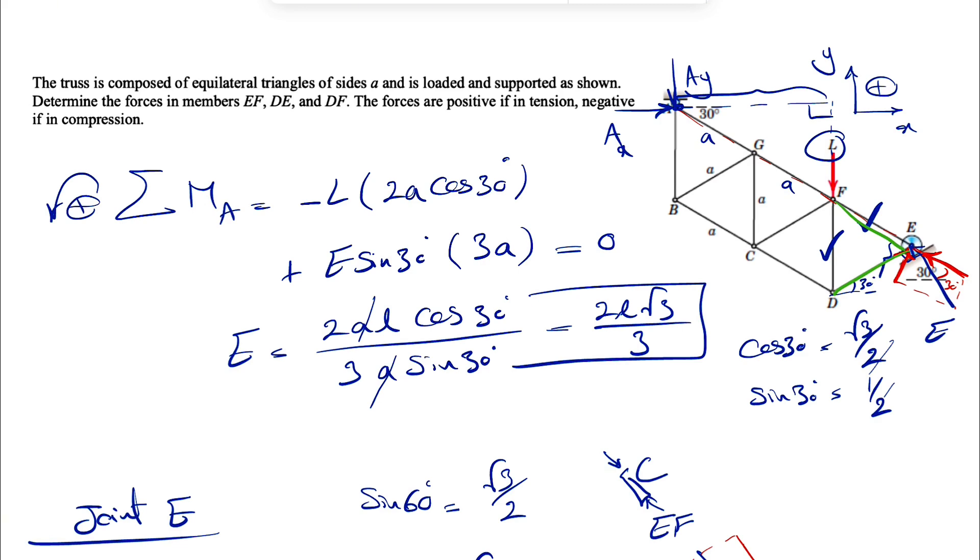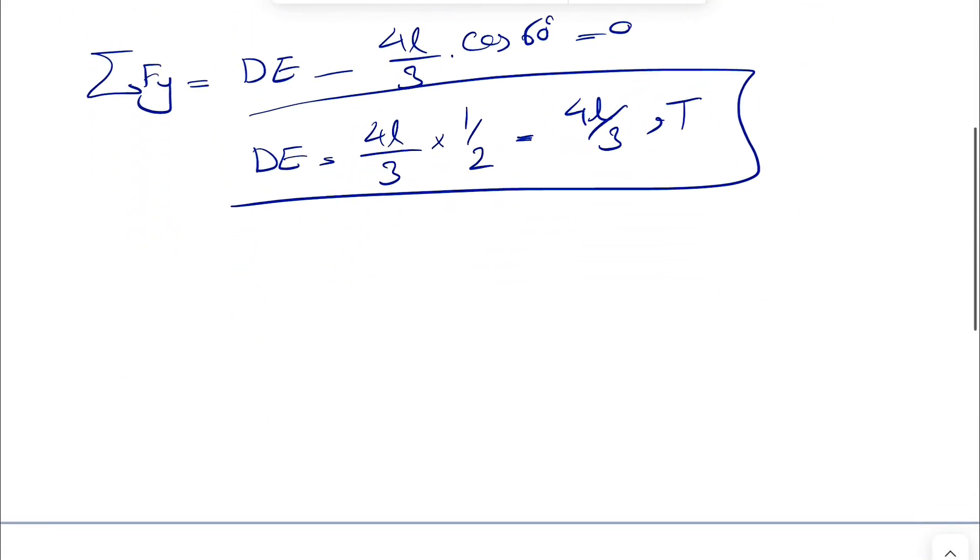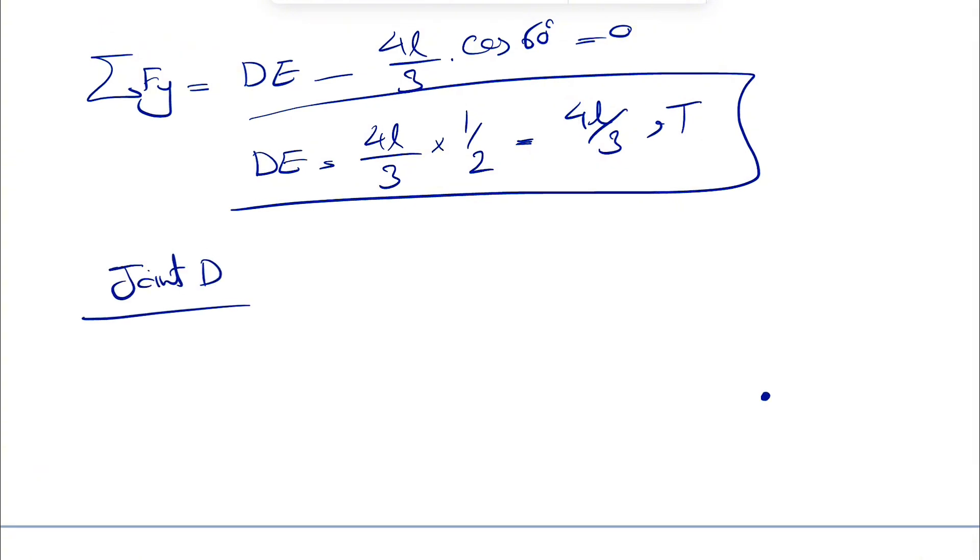So if we just move on to another joint, maybe joint D, we should be able to find the last unknown in here. So let's do that. We're going to do the free body diagram of joint D. And we found our force.